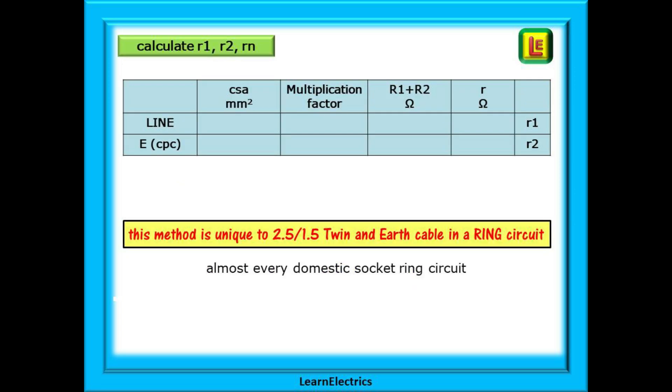Okay, let's calculate little R1. I've shown here a table as a way of making it easier to understand the process. This method is unique to 2.5 twin and earth with a 1.5 CPC and this will cover 99% of households, almost every domestic socket ring circuit in the UK.